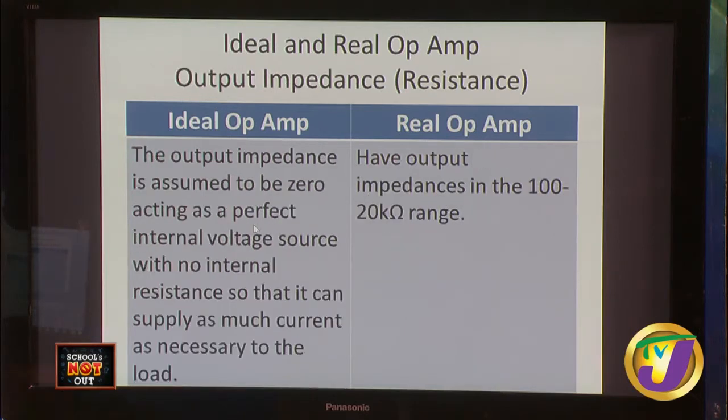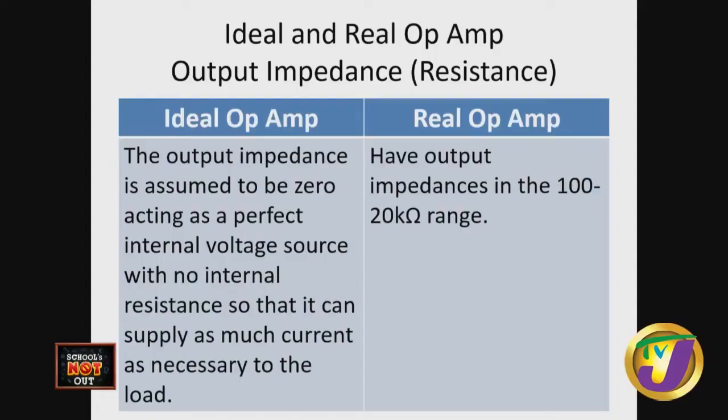The output impedance of an ideal operational amplifier is assumed to be zero, meaning we can get as large a current as we want from it. But real op-amps have output impedances in the range of 100 ohms to 20 kilo-ohms. So the ideal op-amp has no output impedance, while the real op-amp has some output impedance.